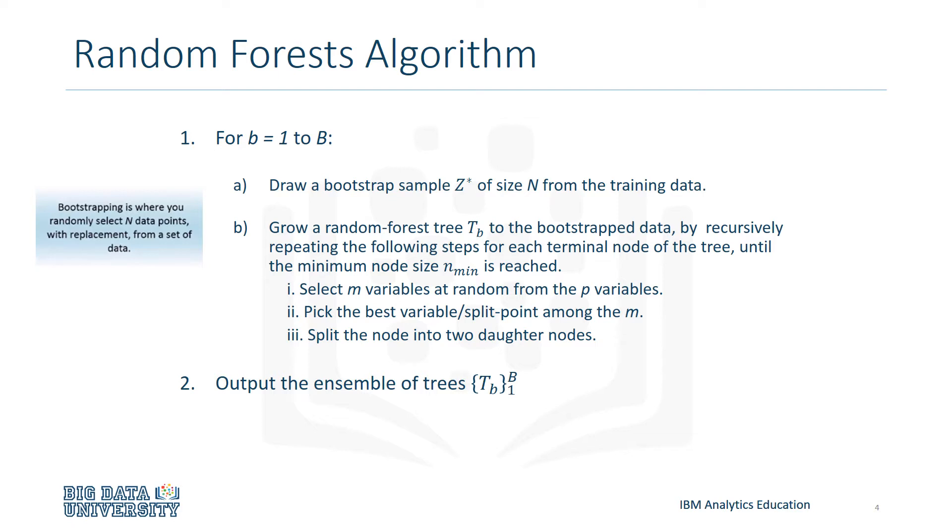Bootstrapping is where you randomly select N data points with replacement from a set of data. This means that some data points may be chosen more than once and some not at all. Note that there are two sources of randomness: randomness in the data and randomness in the feature splits.